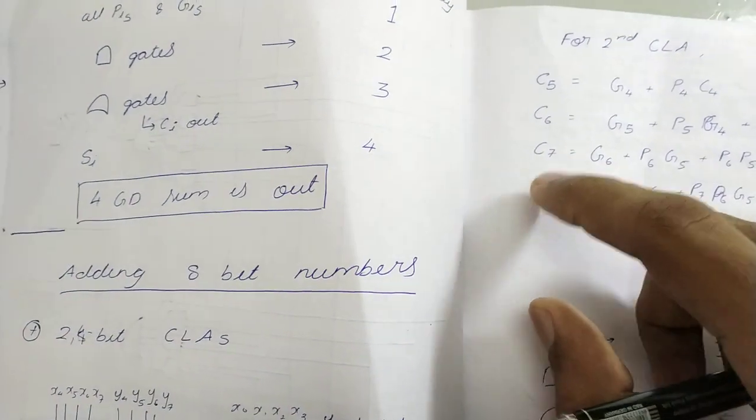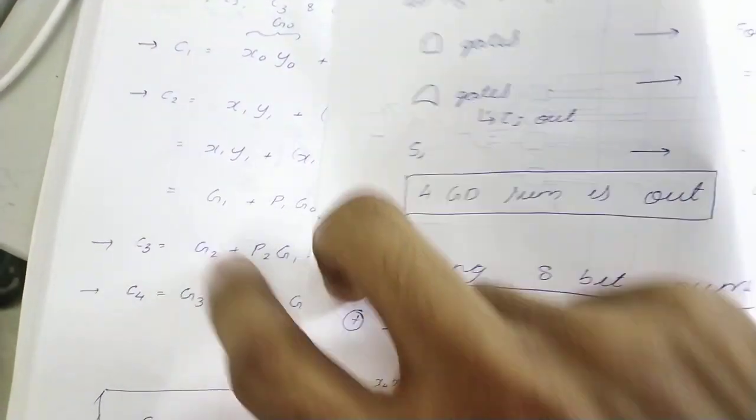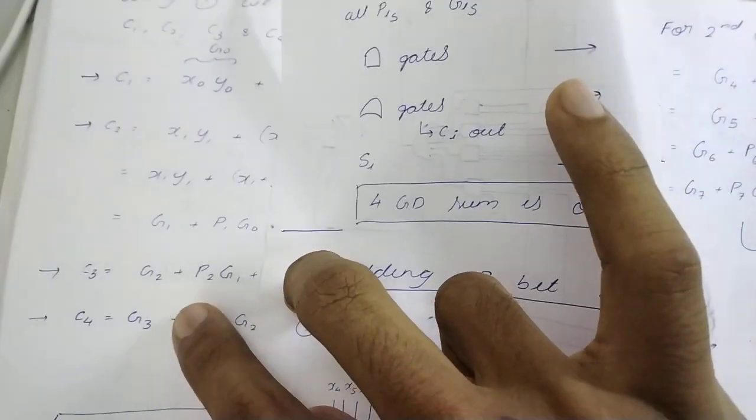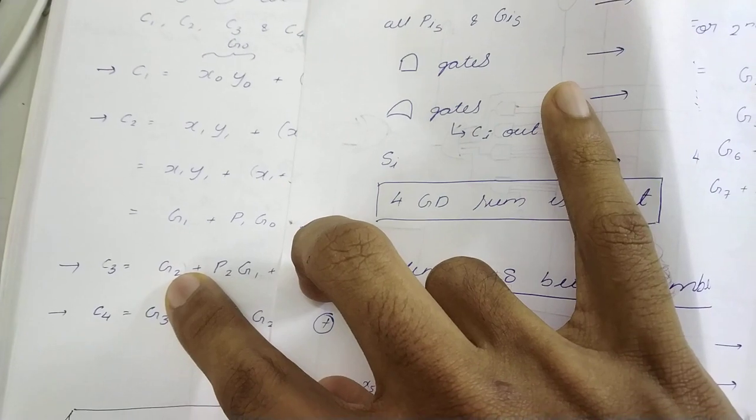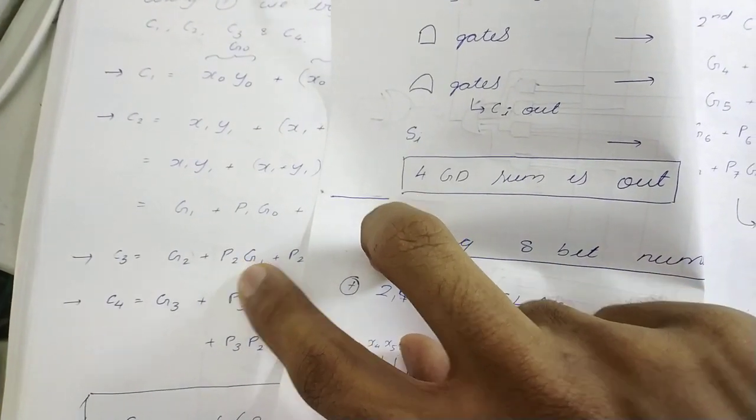If you find this example, maybe 7, that is 3 plus 4. That is C7. So for C7, we have G2 plus 4. That comes out as G6. That G6 is here. Then it is P2. P2 plus 4 is P6.